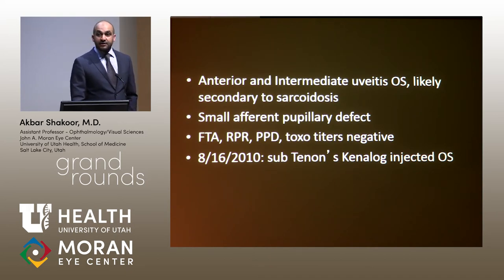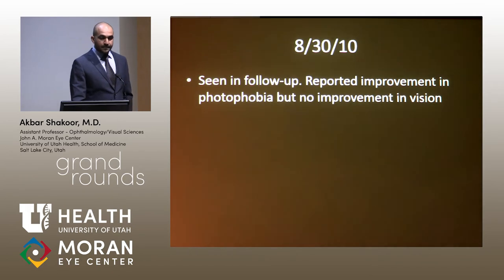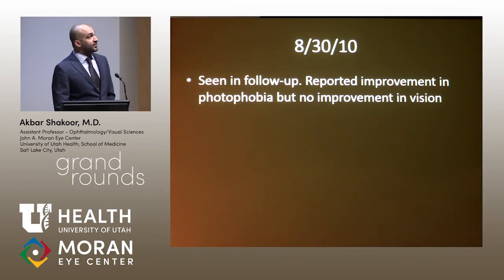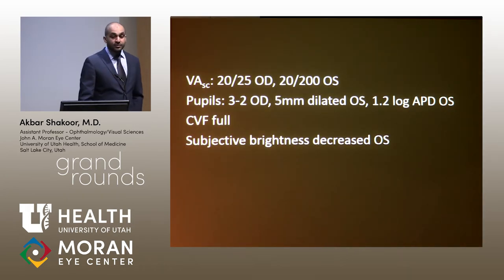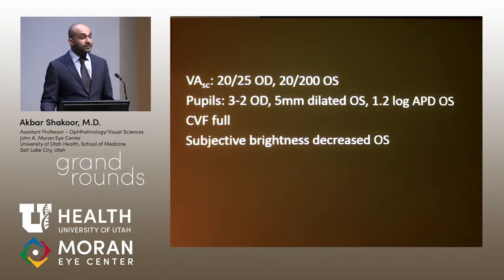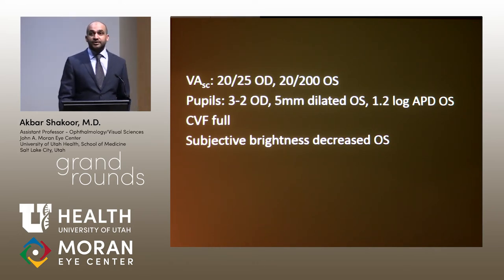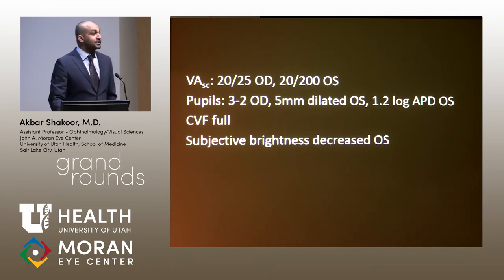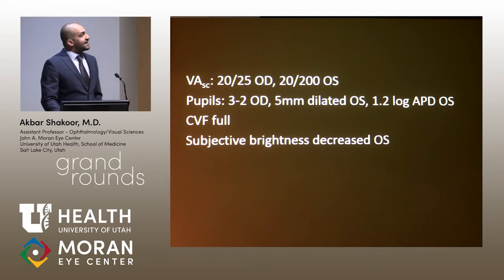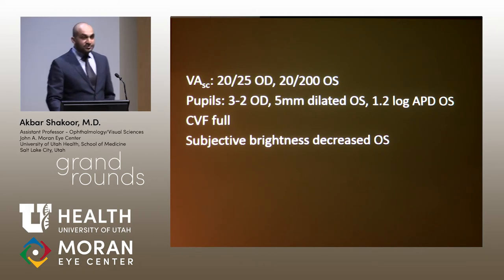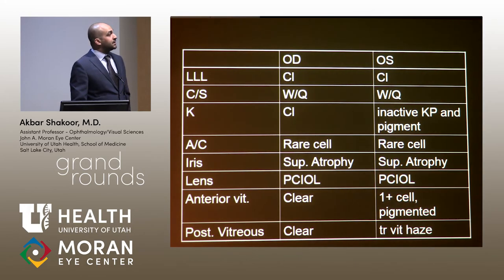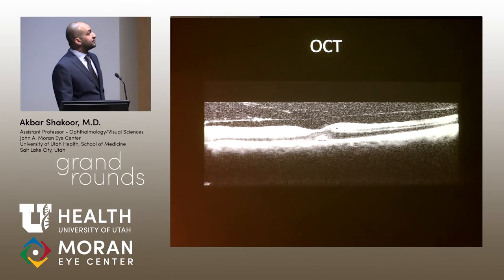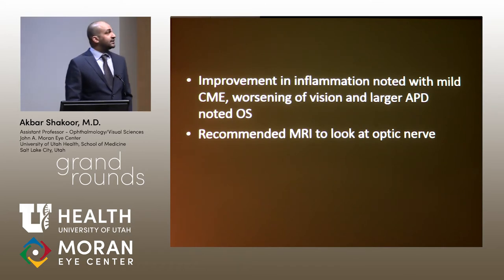He was seen in follow-up and reported improvement in photophobia but no improvement in vision. Although his vision remained at 20/200, he now had a 1.2 log afferent pupillary defect. I cannot stress how important it is to actually measure an afferent pupillary defect — measure them because they do change, and when they change, it's important to image the patient. His cell had improved, his uveitis had improved, and his OCT showed a little bit of swelling.